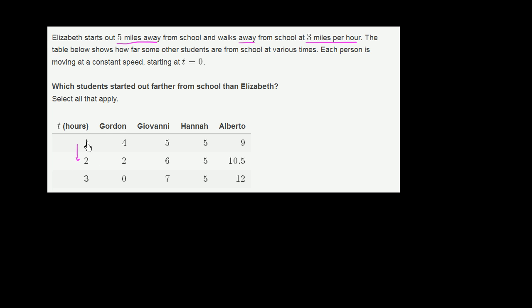As we go from hour 1 to hour 2, Gordon gets 2 miles closer. So his distance to school is decreasing. So where was he at time equals 0?